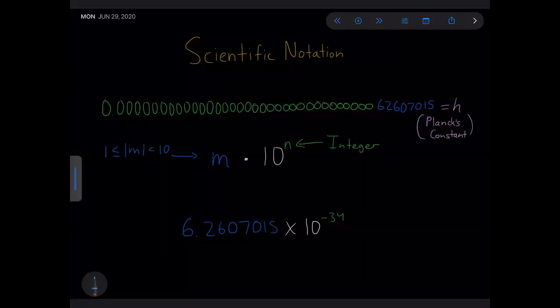In scientific notation, we write a number in the form m times 10 to the n. M is a real number where its absolute value is between 1 and 10 — it could be 1, but not 10 — multiplied by a power of 10, where n is an integer. So Planck's constant in scientific notation is 6.2607015 times 10 to the negative 34. M is between 1 and 10, and the exponent is an integer.